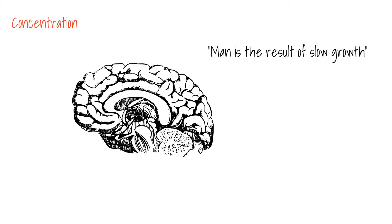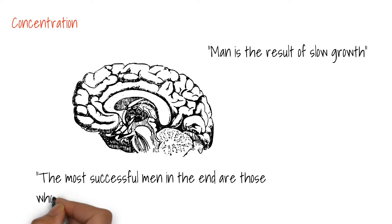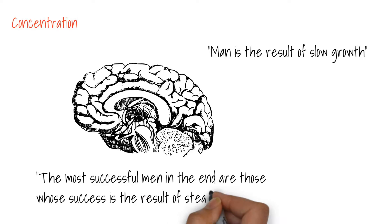Man is the result of slow growth, Bell said. The most successful men in the end are those whose success is the result of steady accretion. By advancing carefully, one step at a time and widening your mind with each step, you will be better able to grasp any situation or topic.